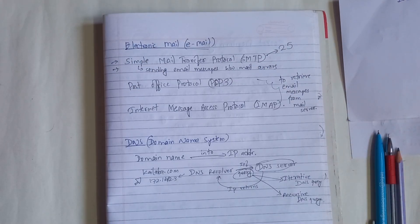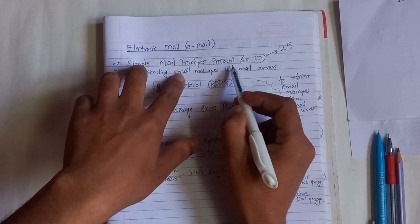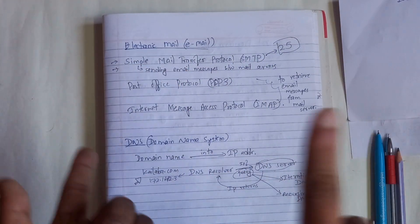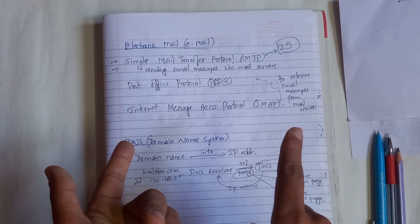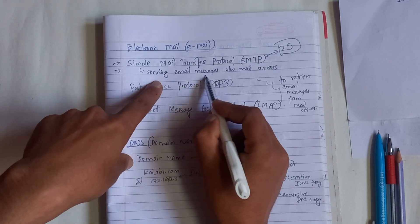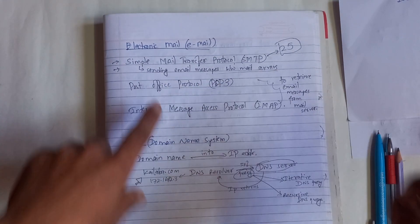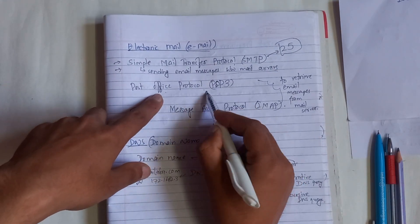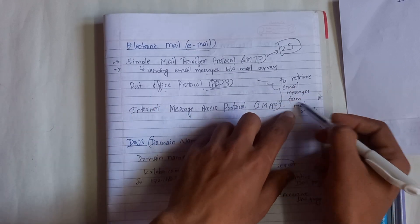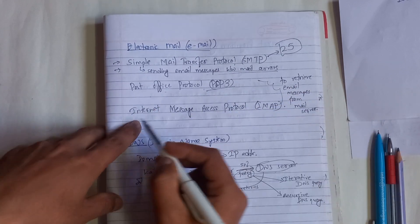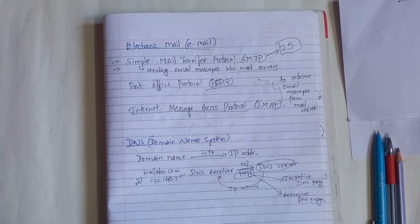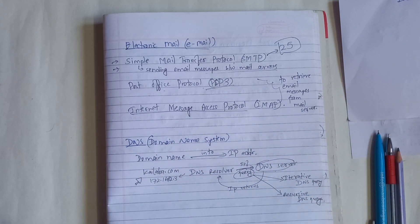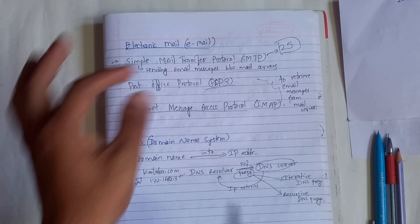Email — electronic mail. SMTP, Simple Mail Transfer Protocol, uses port 25 for sending email messages between mail servers. POP3, Post Office Protocol 3, is used to retrieve email messages from a mail server. IMAP, Internet Message Access Protocol, is also used to retrieve email messages from the server.